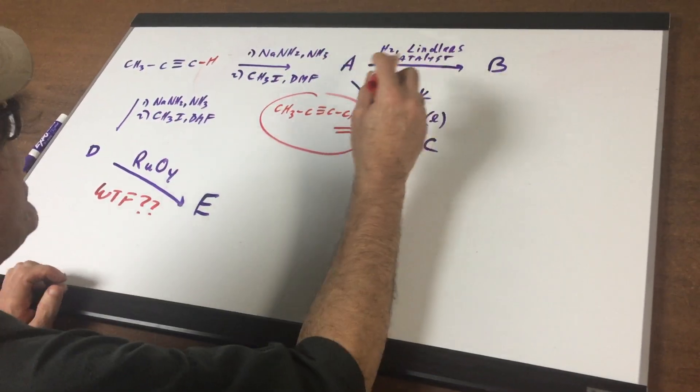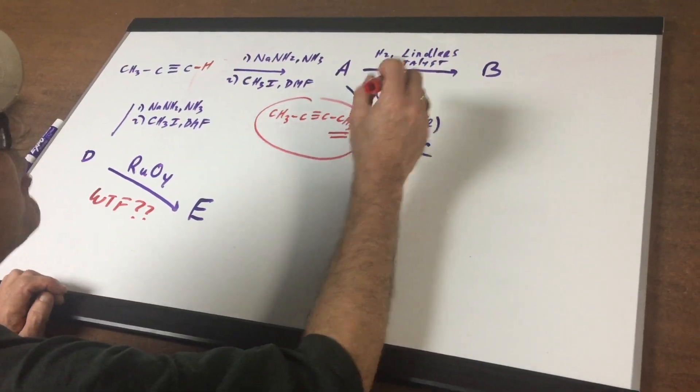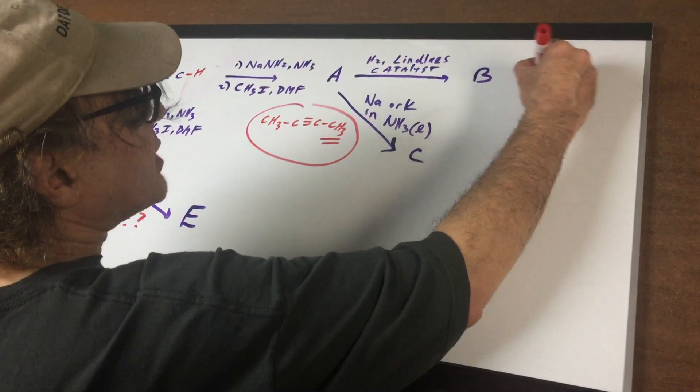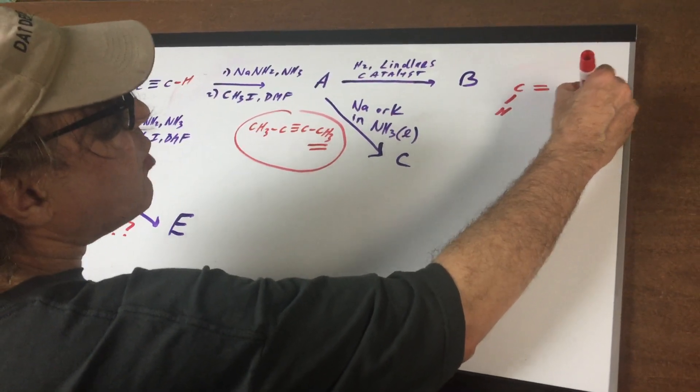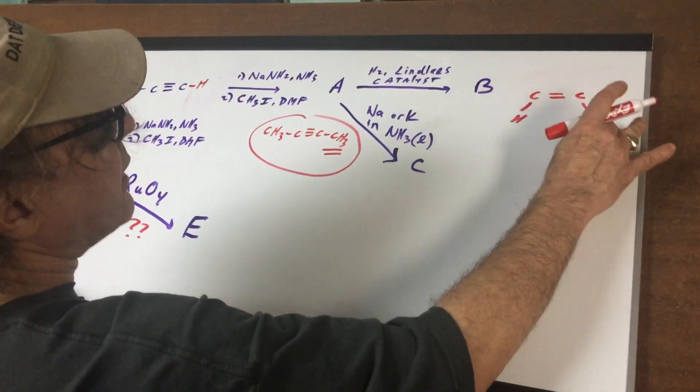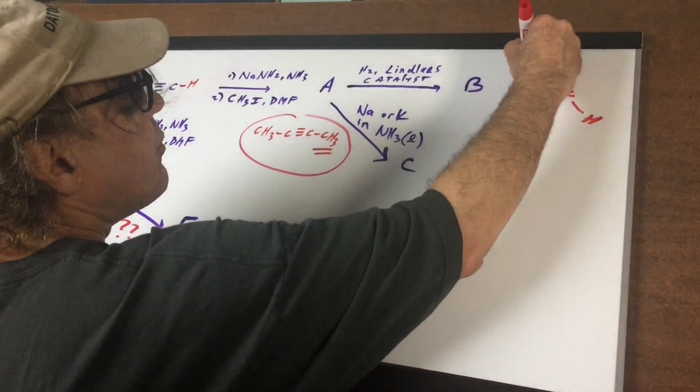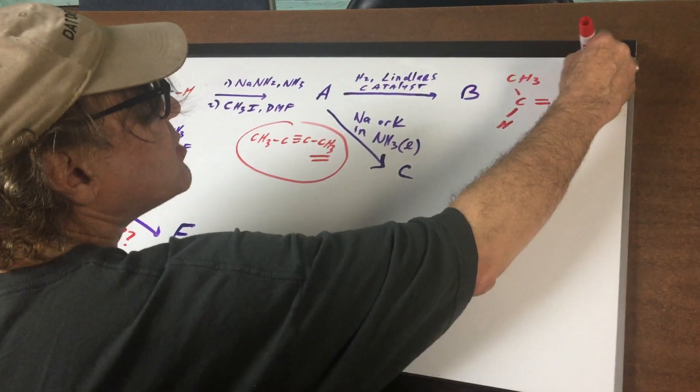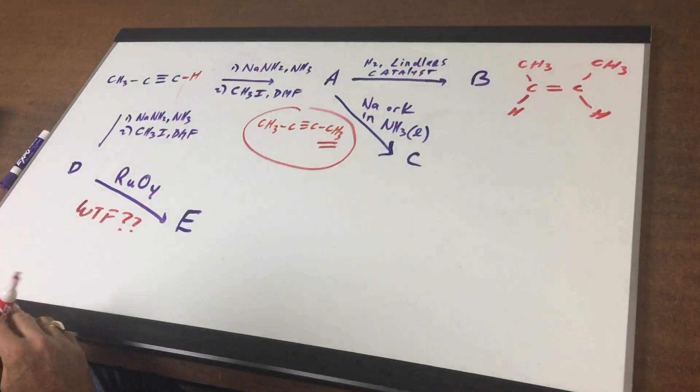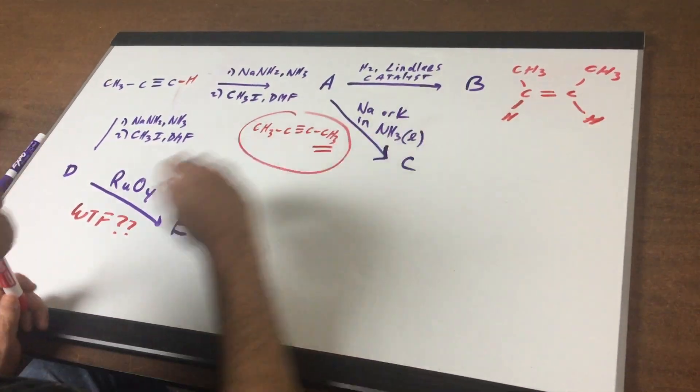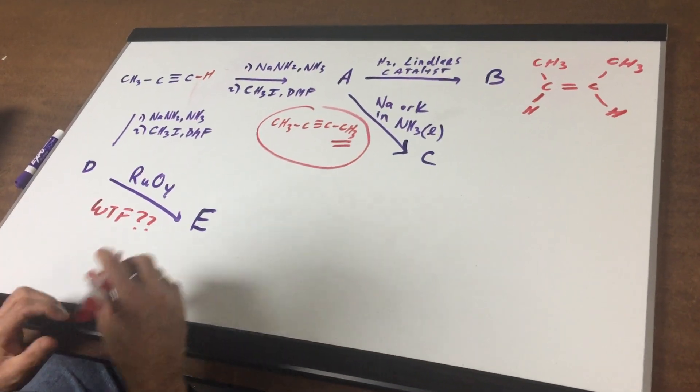From A to B we're gonna take A and we're gonna treat it with hydrogen and Lindlar's catalyst. What hydrogen and Lindlar's catalyst is gonna do is add two H's from the same side and then this would be on the same side as well and we would end up with the cis alkene and it stops after only one addition of hydrogen mole is added.